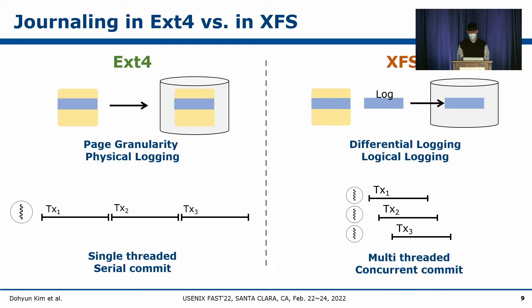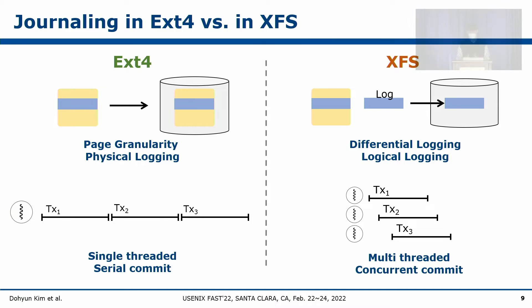This shows the difference between the journaling mechanisms of EXT4 and XFS. When EXT4 commits a transaction, it flushes the original page directly. On the other hand, XFS first creates the log by copying the updated data, and then flushes the log to disk. Unlike EXT4, XFS separates the memory space for metadata update, journaling, and for each transaction, enabling XFS to avoid conflicts when two or more transactions share the same memory space.